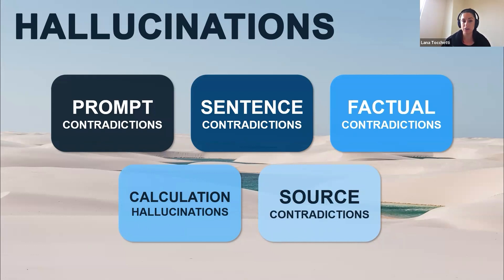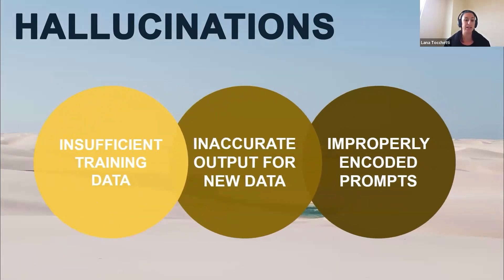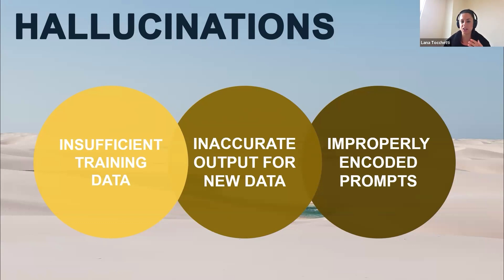There are a few reasons why hallucinations can happen. This could include insufficient training data — the AI just might not have enough information on that topic, or may have gaps or even contradictions in its training data. There's also inaccurate output for new data — when it's faced with unfamiliar scenarios, the AI might generate incorrect information because it's so well attuned to its training data that it can't deal with new situations, producing weird and wacky responses. And then there are prompts that are not properly encoded — if your prompt is ambiguous or vague with multiple possible meanings, it can be encoded improperly and generate unexpected responses.